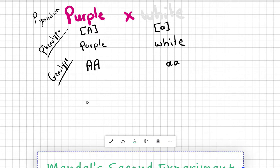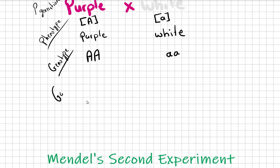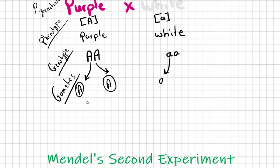Next we write the gametes. According to Mendel's law of segregation, every parent plant will give only one of its alleles. So the purple plant gives 100% capital A, and the white plant gives 100% lowercase a.